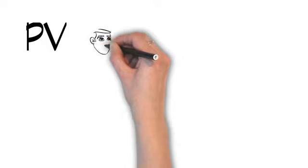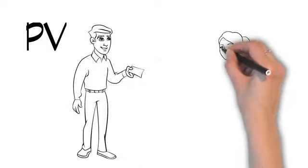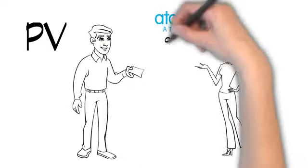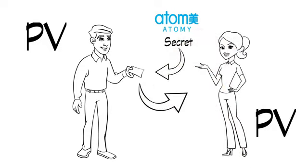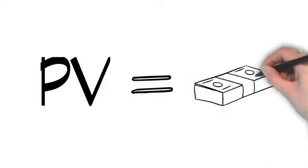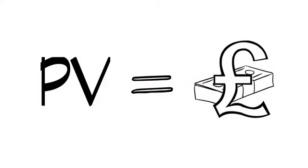It gets better. You share Atomy's secret with others, they become members, and when they shop, you all earn PV. And what does PV mean? Cash. Paid to you as commission.